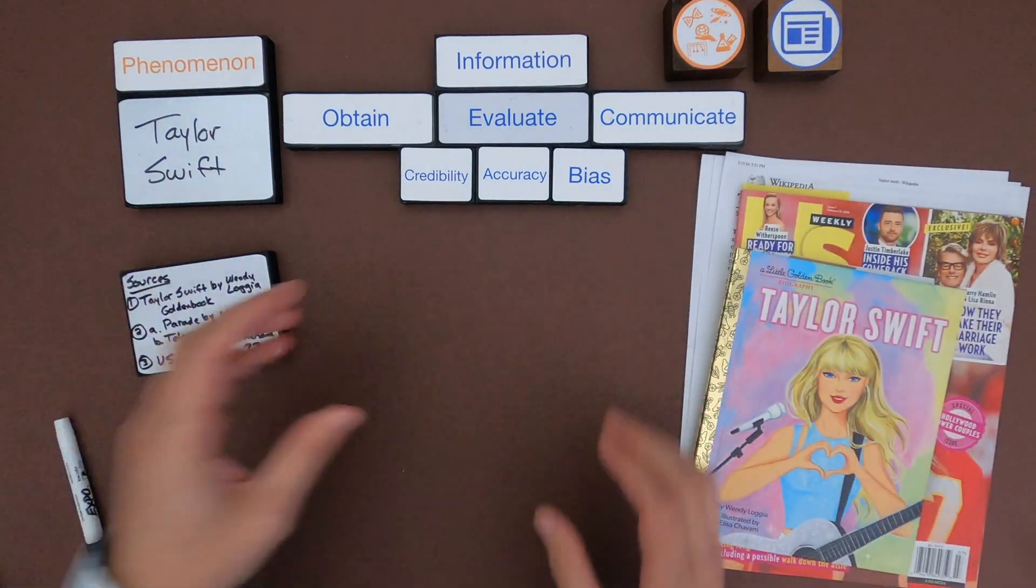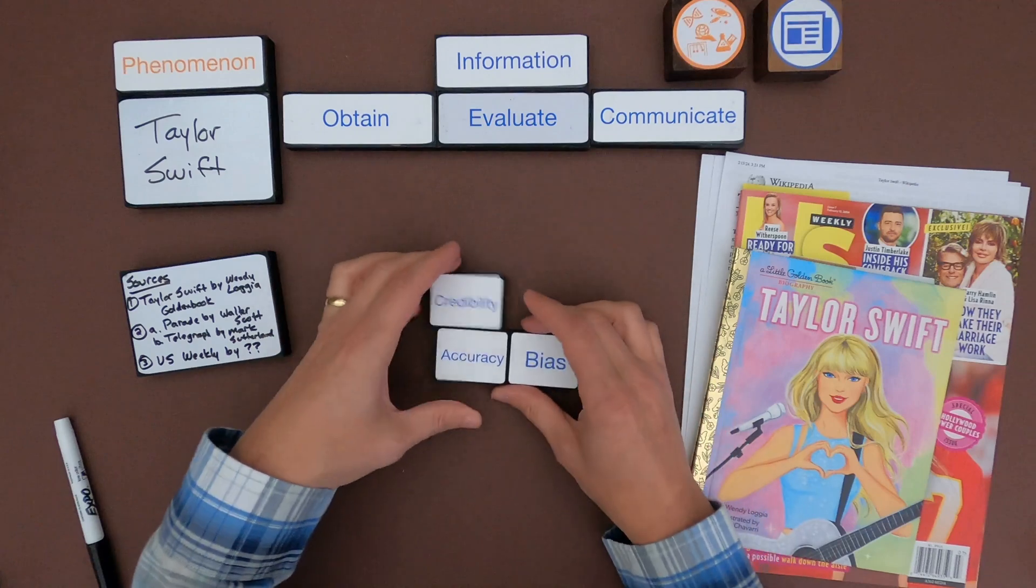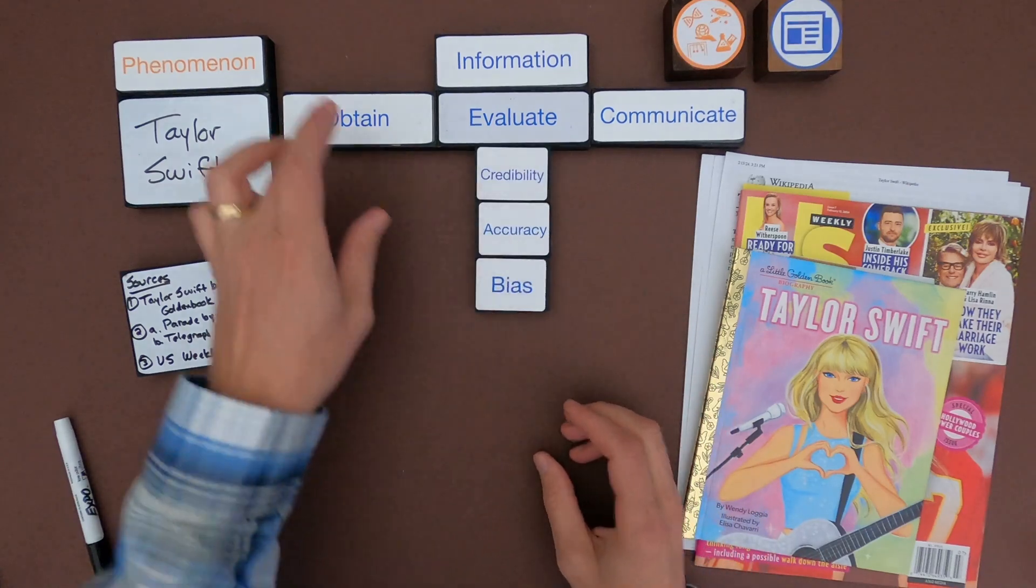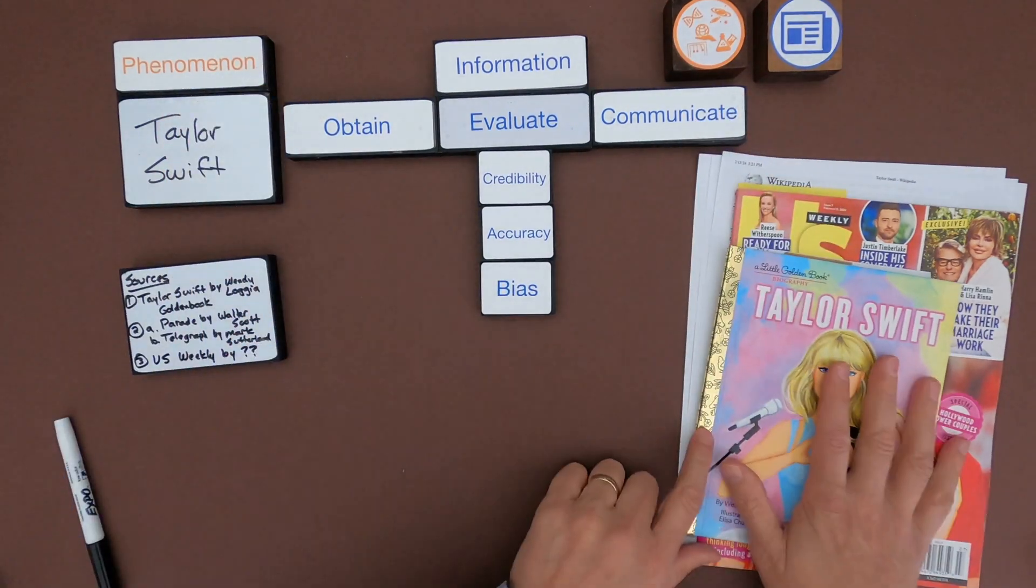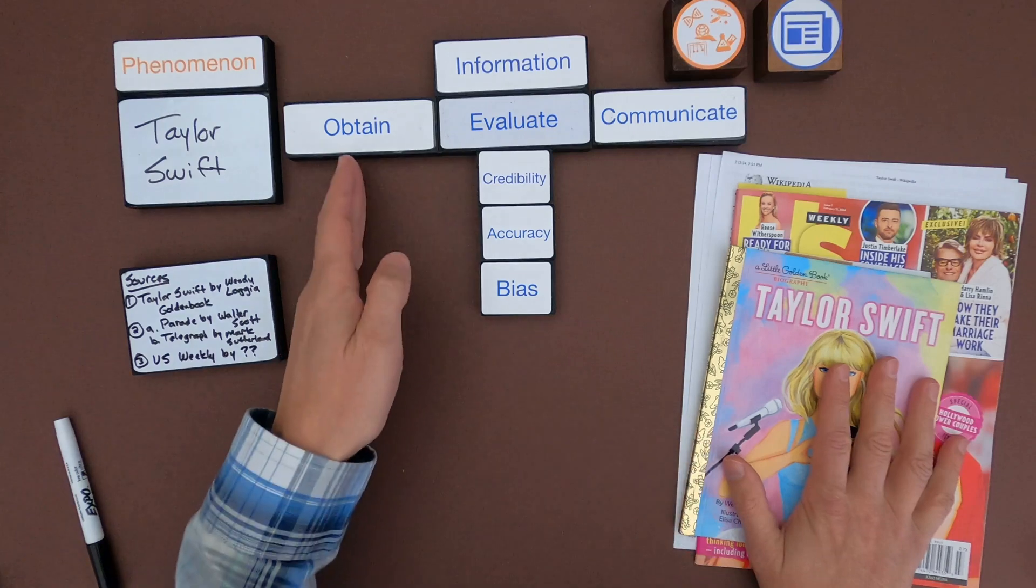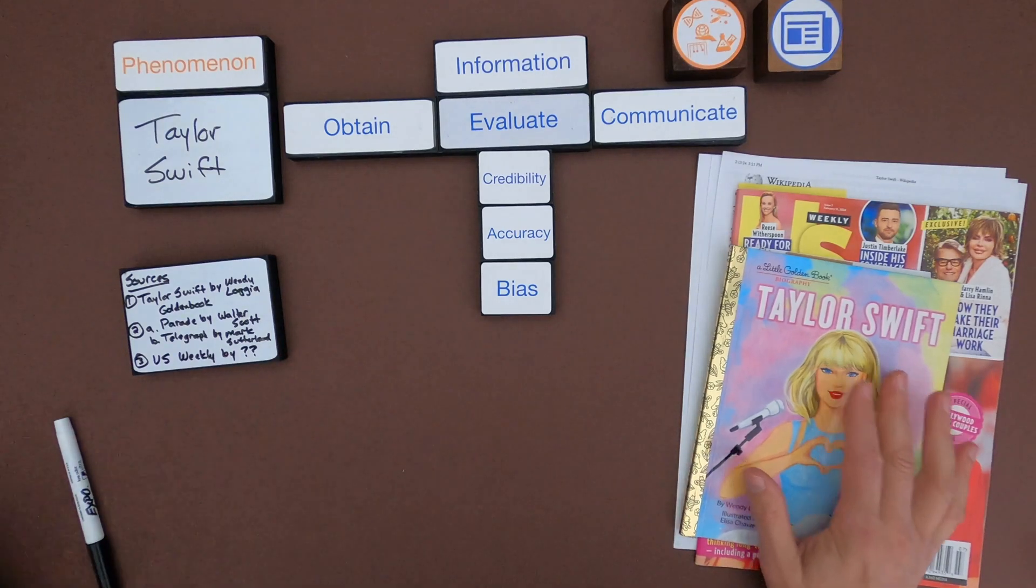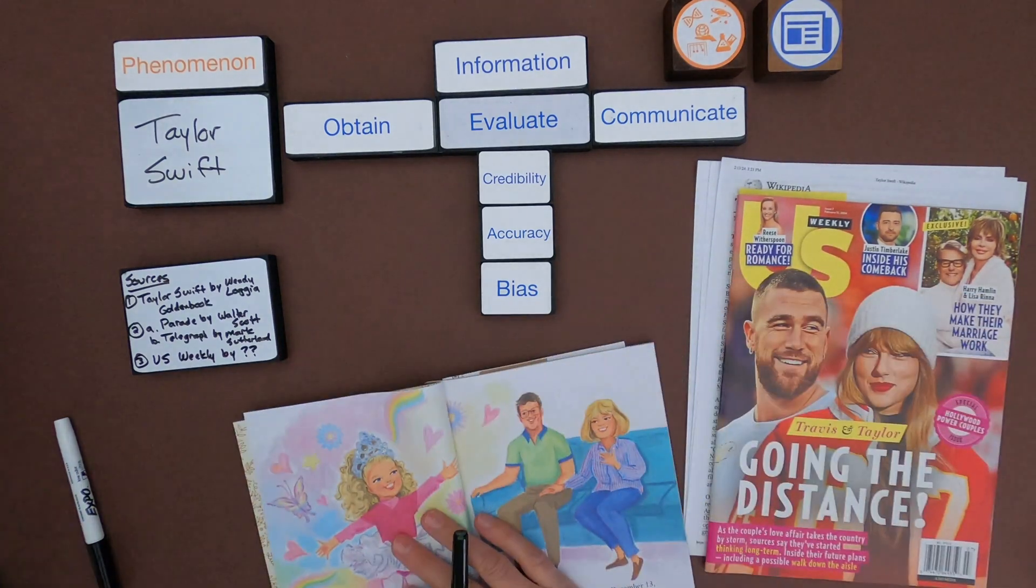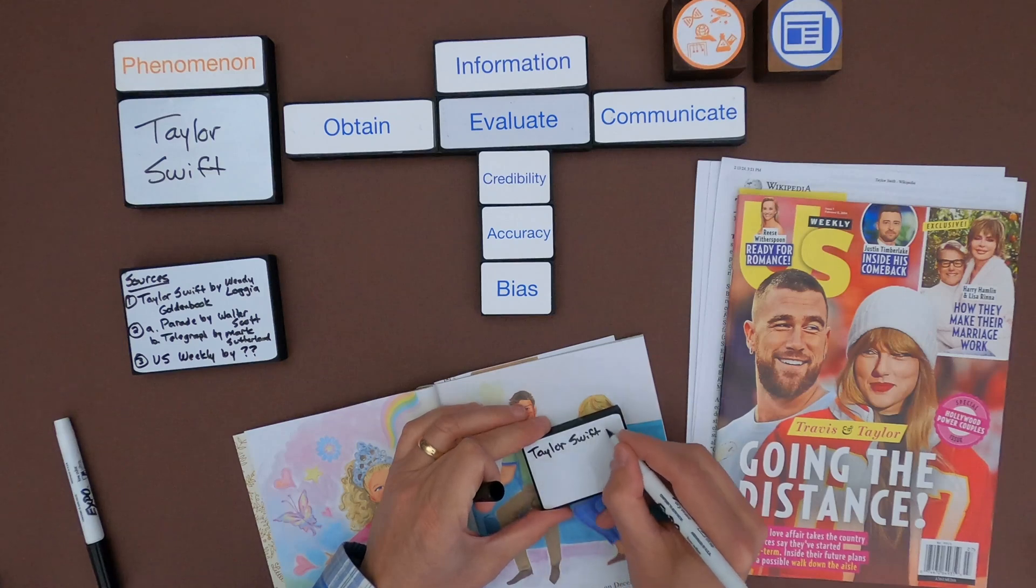So the first thing you do is make sure that you have cited your source material. And then the next thing I'm going to do is I'm just going to go through, and I'm just going to obtain a little bit of information from each of the sources. And I'll just list those down here.